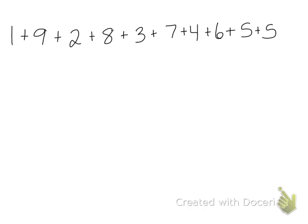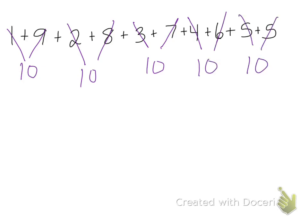Well, I know that 1+9 equals 10. 2+8 equals 10. 3+7 equals 10. 4+6 equals 10. And 5+5 equals 10. So now I can just count by 10s. 10, 20, 30, 40, 50. So all of those numbers added together equals 50.